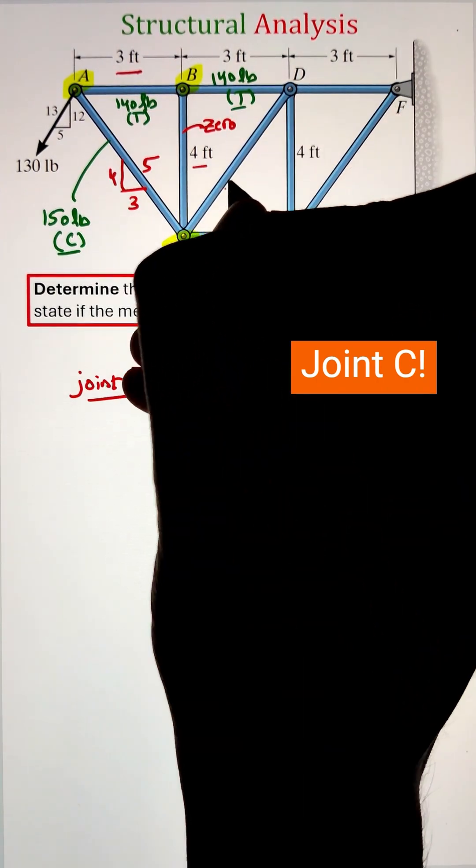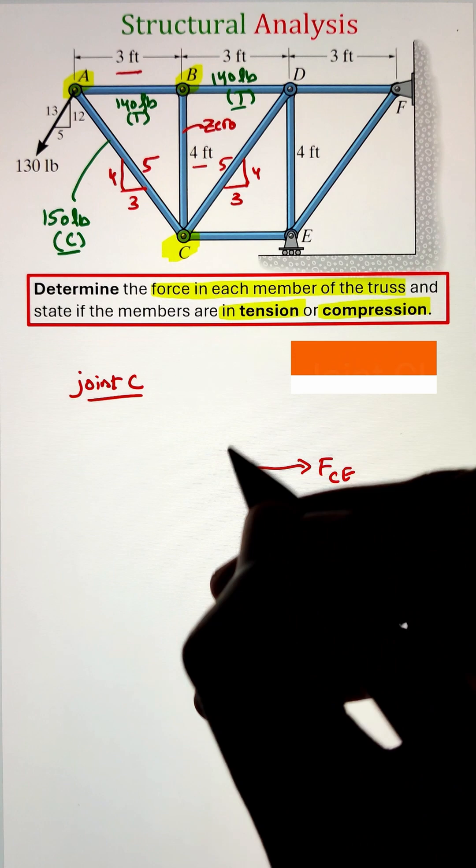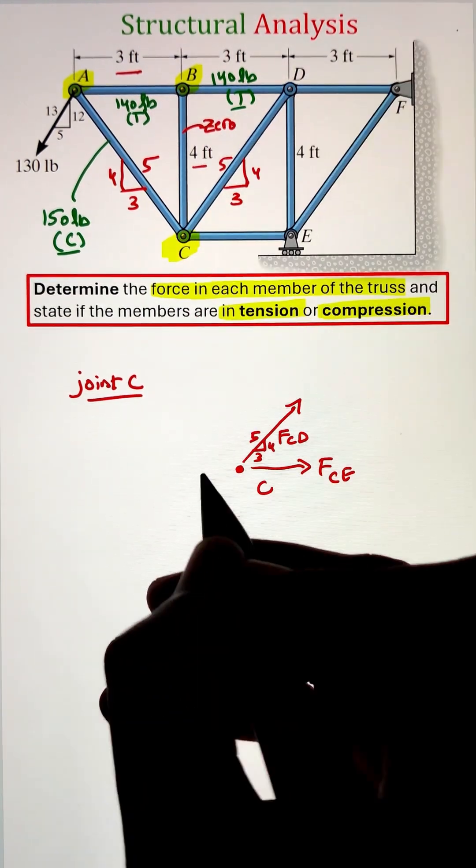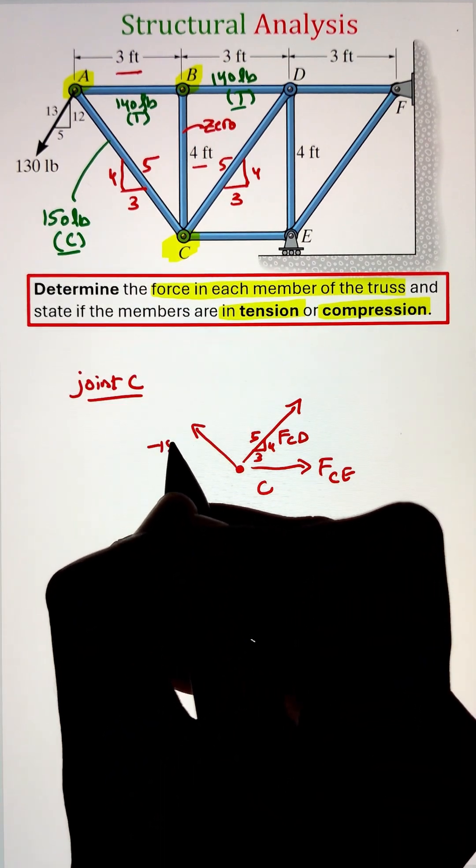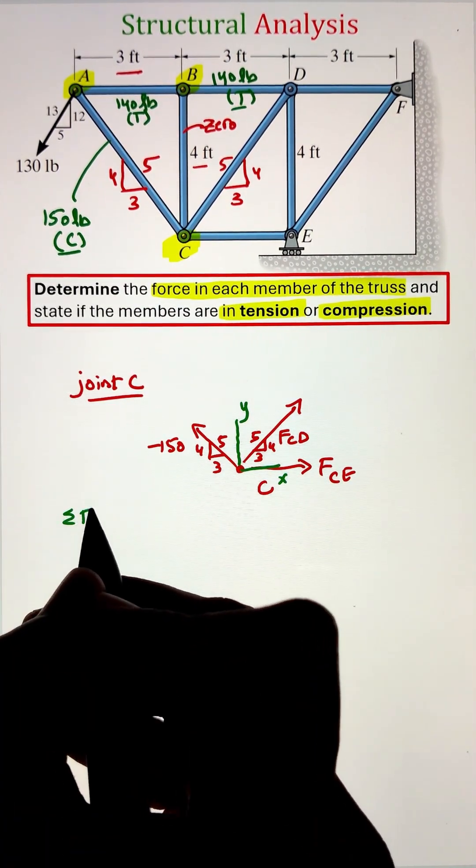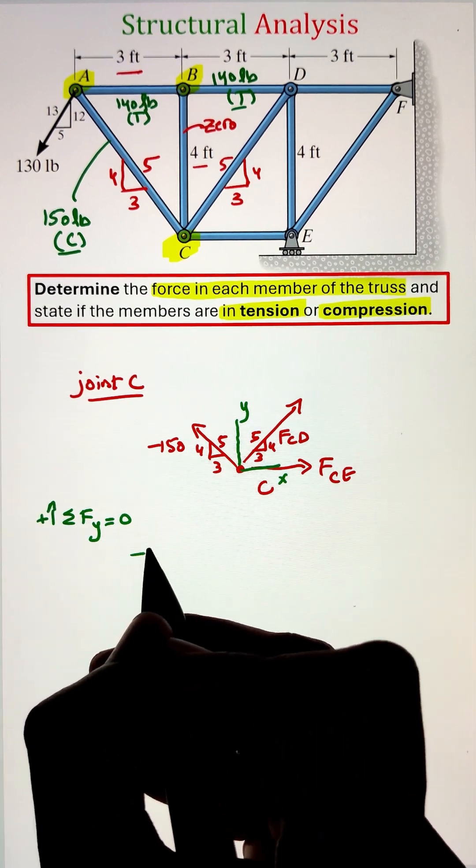Next, we can move to joint C and repeat the same process of drawing the free body diagram and listing down all the unknown loads and the known loads as well. Since member CA was 150 pounds in compression, that's why it is given as negative 150.